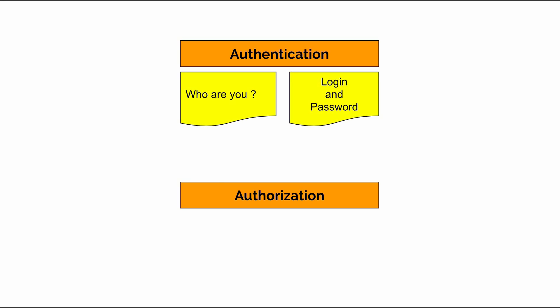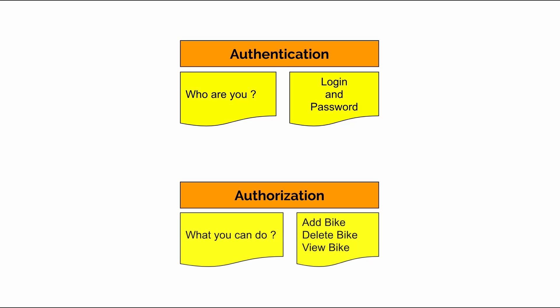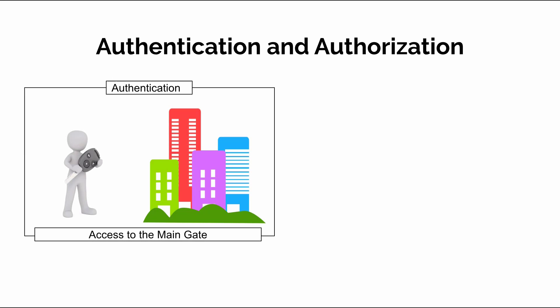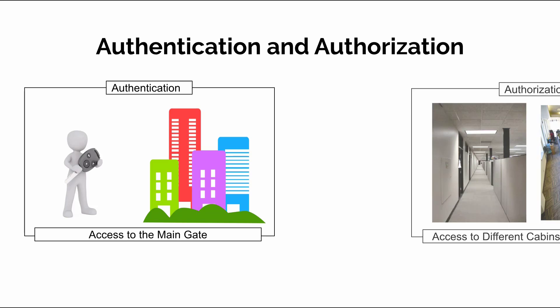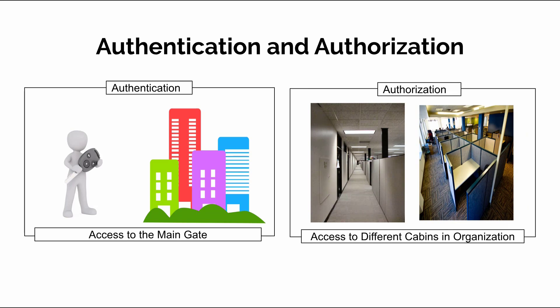Authentication is the process of obtaining credentials from the user and using those credentials to verify that the user is valid or not. On the other hand, authorization comes after authentication. This is the process of providing access to the different resources in our application as per their roles. You can understand it by thinking of authentication as the key to the main gate of an organization, and authorization as the key to different cabins within an organization.